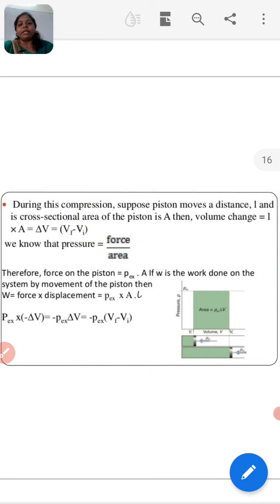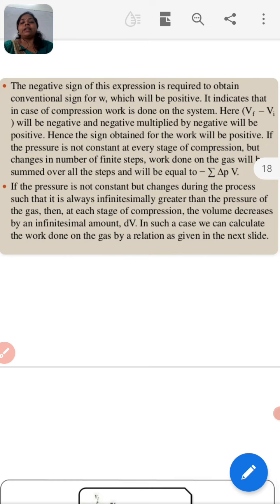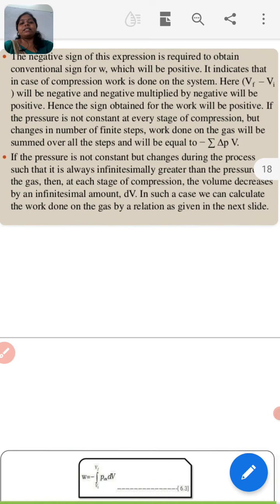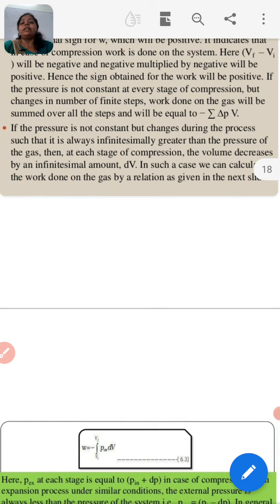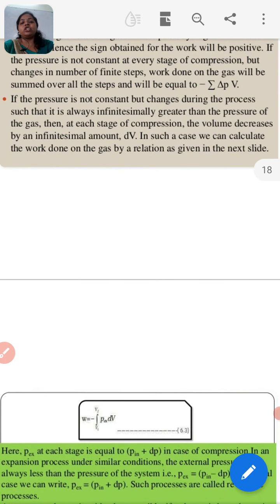If the pressure is not constant at every stage of the compression but changes in a number of finite steps, work done on the gas will be summed over all the steps and will be equal to sigma del pv. If the pressure is not constant - we were talking about when pressure was constant, but if pressure is not constant but changes during the process such that it is always infinitely greater than the pressure of the gas, then at each stage of the compression, the volume decreases by an infinitesimal amount.